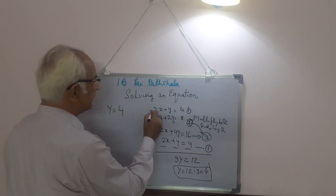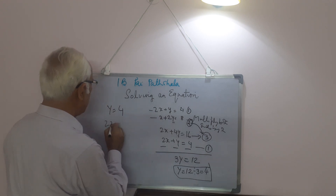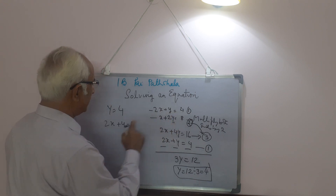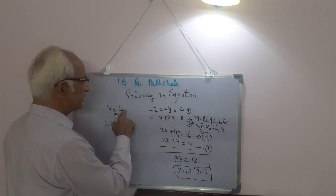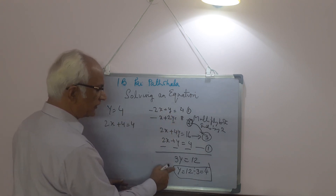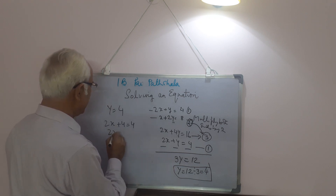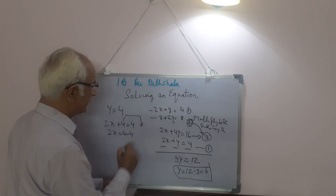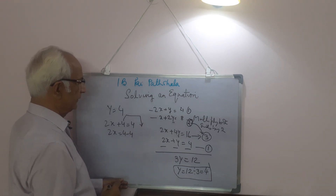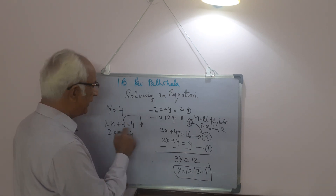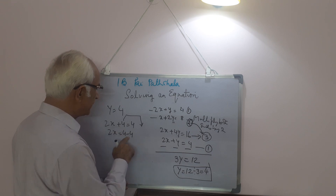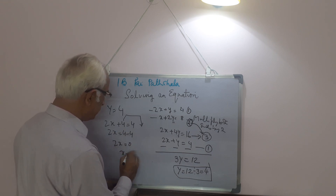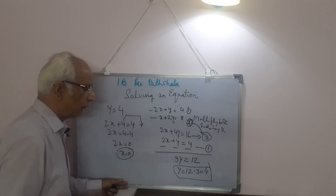Now we know y equals 4. We put this value into the first equation: 2x plus 4 equals 4. So 2x equals 4 minus 4 — I shifted 4 to the right side, where it was being added so now it will be subtracted. Therefore 2x equals 0 and x equals 0.